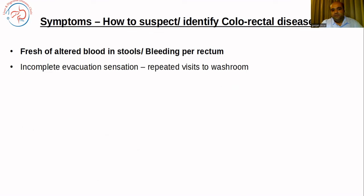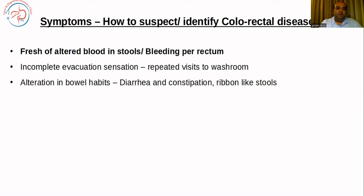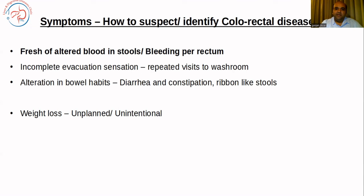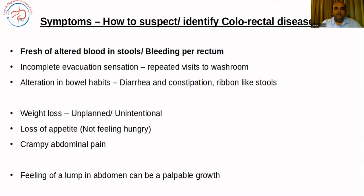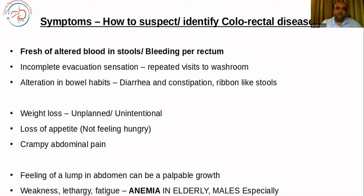Other symptoms include incomplete evacuation sensation, repeated visits to the washroom, and alteration in bowel habits. Alternating diarrhea and constipation is a very important history when it comes to colorectal cancer. Unplanned or unintentional weight loss, loss of appetite, crampy abdominal pain, and feeling of a lump in the abdomen or a palpable growth are some of the symptoms of colorectal cancer.